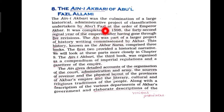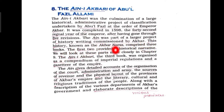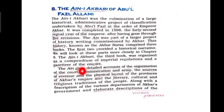The Ain-i-Akbari was written by Abul Fazl at the order of Emperor Akbar and was completed in 1598, in the 42nd regnal year of the emperor, having gone through five revisions. The Ain-i-Akbari was part of a larger project of history writing commissioned by Akbar, known as the Akbarnama, which comprises three books. The first two books provide a historical narrative, while the third book is organized as a compendium of imperial regulations and a gazetteer of the empire.